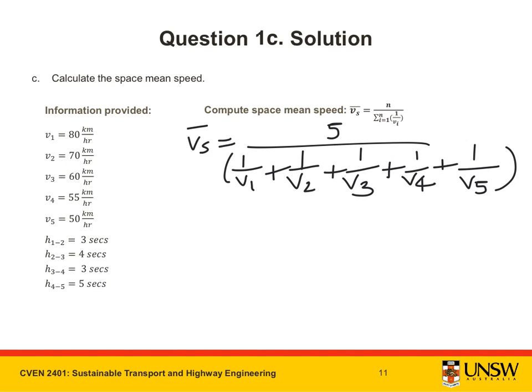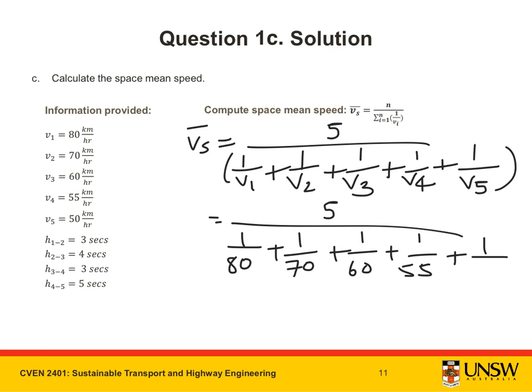Let's then go ahead and substitute in the appropriate values for V. Doing this gives us a space mean speed of 61.248 km per hour.